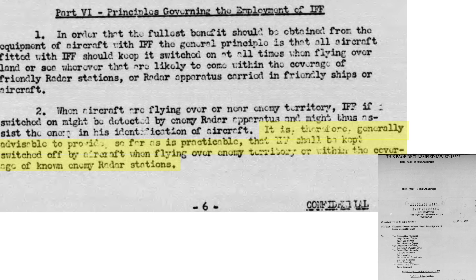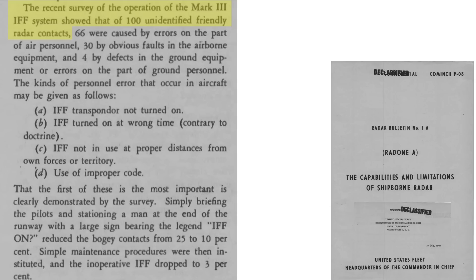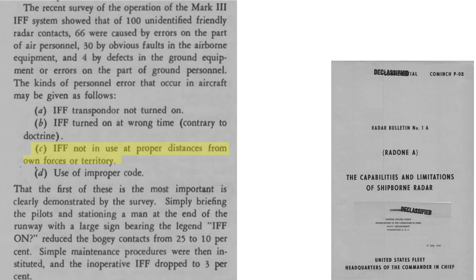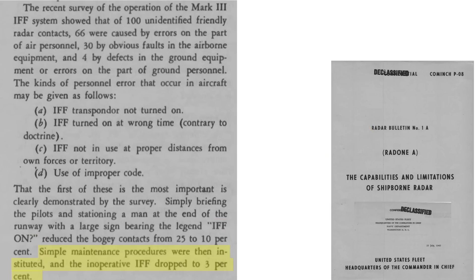Pilots were lax about following IFF usage guidelines, as discussed in a 1983 Army Air Forces in World War II document. One test showed 80% of pilots did not have their sets on when operating procedures indicated otherwise. A study of 100 non-IFF radar contacts showed 66% were from pilot error, 30% equipment error, and 4% ground equipment or operator error. Air crew errors included the IFF not being turned on, turned on at the wrong time or location, turned on at incorrect distances from the coastline, or on the wrong IFF channel. Since not turning on the system at takeoff was the largest error, a ground personnel holding a large sign reading 'IFF On' reduced bogey contacts by 10 to 25%, and additional system maintenance reduced equipment errors down to 3%.